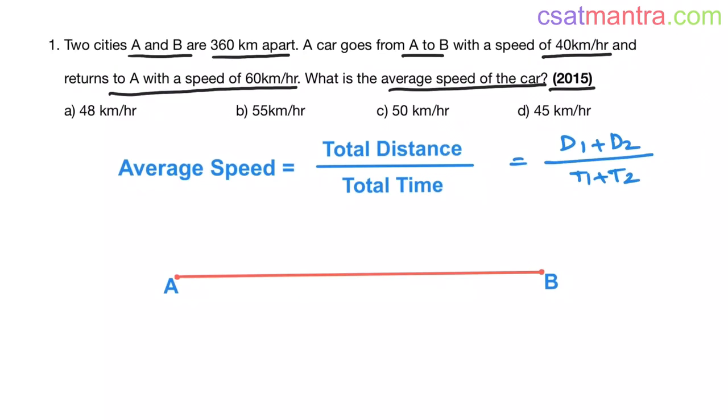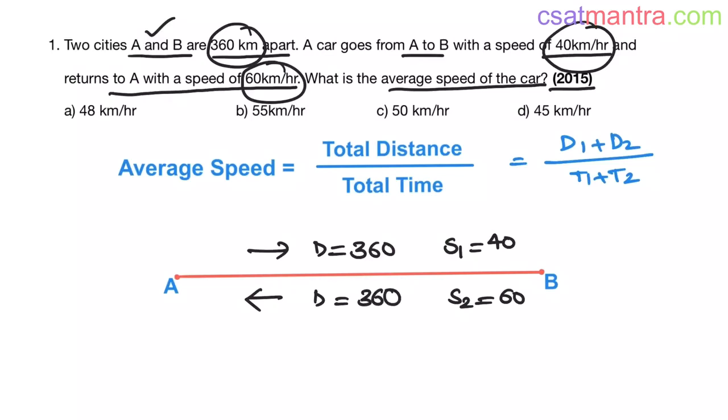Now, two cities A and B are 360 kilometers apart. The distance between A and B is 360, let's call it as d. A car goes from A to B with a speed of 40 kilometers per hour. Let's call this speed as s1, that equals 40 kilometers per hour. And returns to A with a speed of 60 kilometers per hour. Let's call this speed as s2, that's 60 kilometers per hour. And how much is distance? This distance is the same, that equals 360.